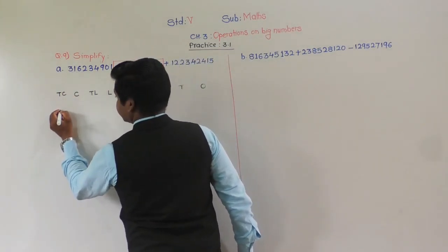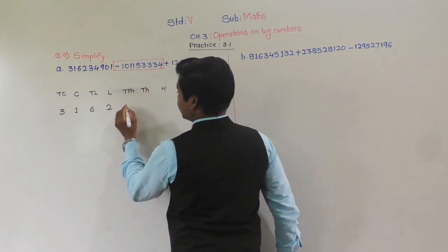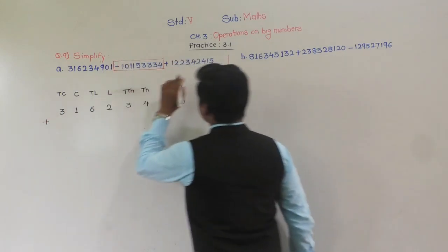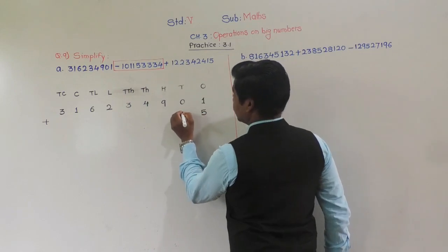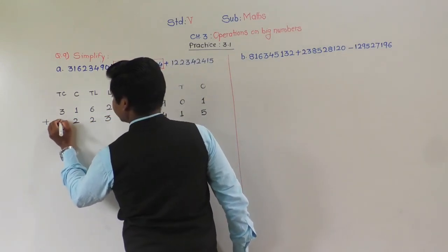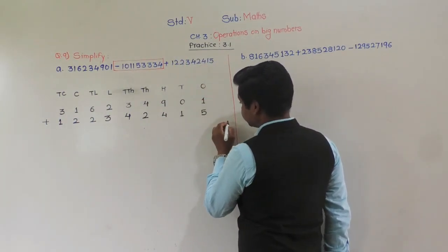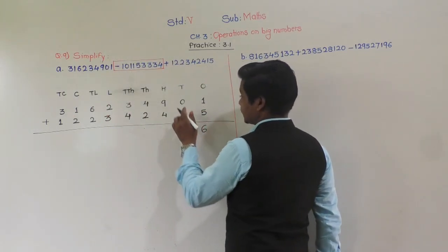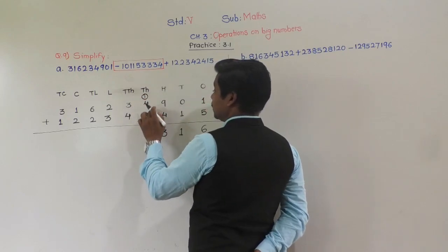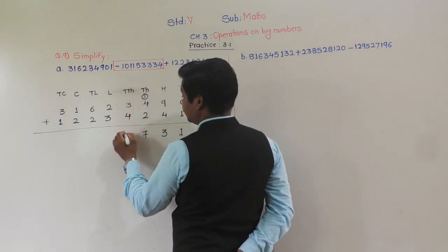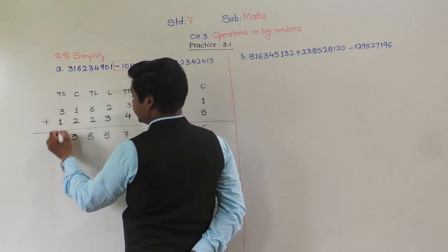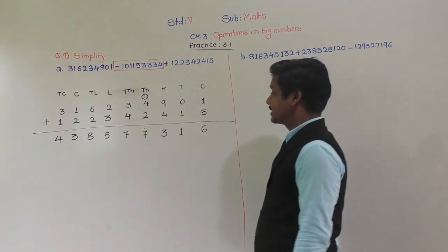The first number is 31 crore 62 lakh 34901, and we add 12 crore 23 lakh 42415. Writing digits in place value columns: 1 plus 5 is 6, 0 plus 1 is 1, 9 plus 4 is 13 — write 3 carry 1, 4 plus 2 plus 1 is 7, 3 plus 4 is 7, 2 plus 3 is 5, 6 plus 2 is 8, 1 plus 2 is 3, 3 plus 1 is 4. So the sum is 43 crore 85,77,316.